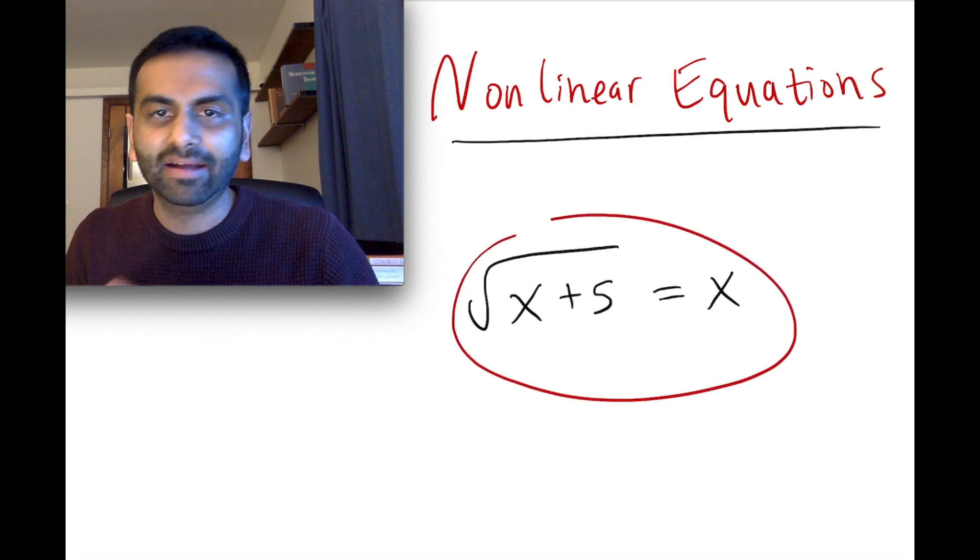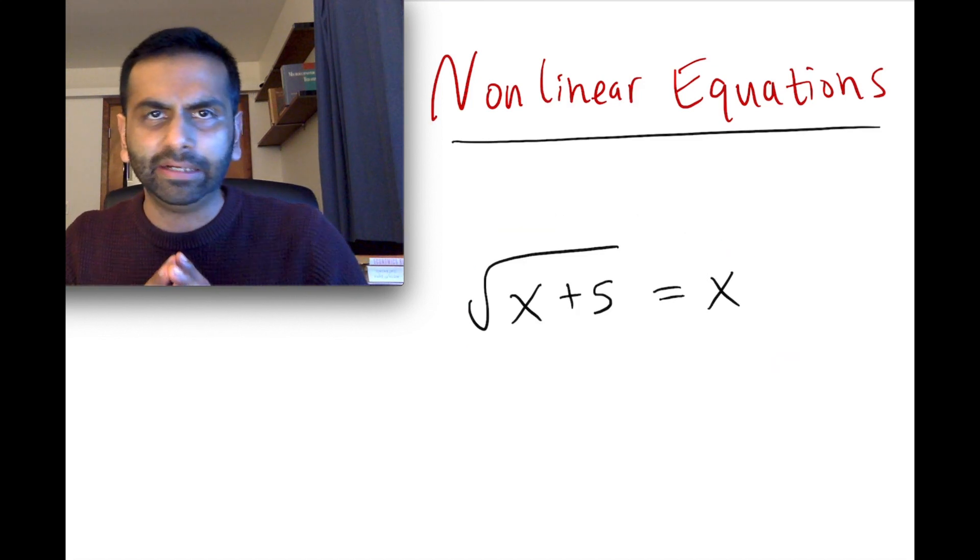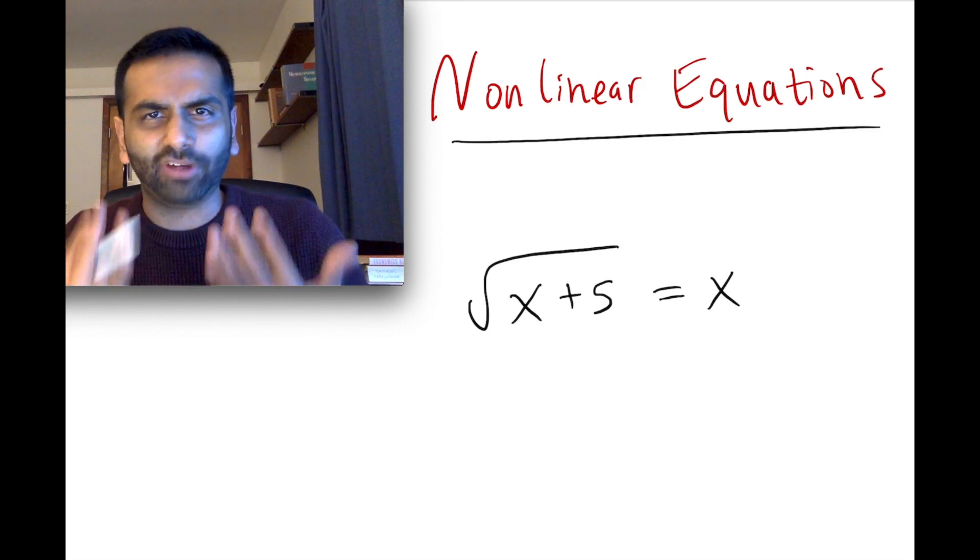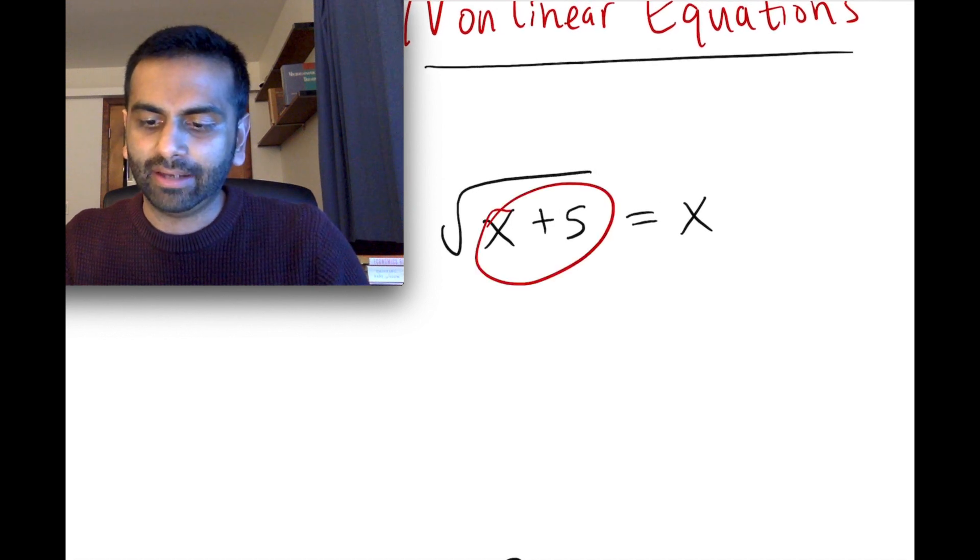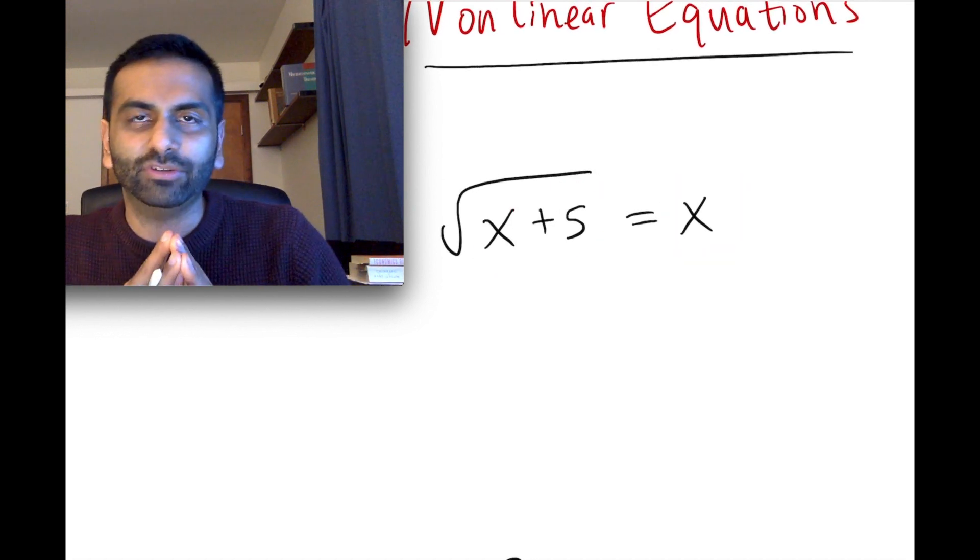Let's say you're given this guy and asked to solve for x. Here, this clearly is not a quadratic equation. But how would you actually solve for it? Because there's an x underneath the square root here and one not under the square root here. So it's not really obvious what you should do.